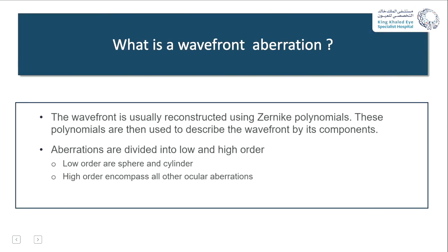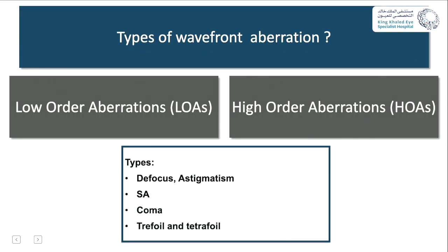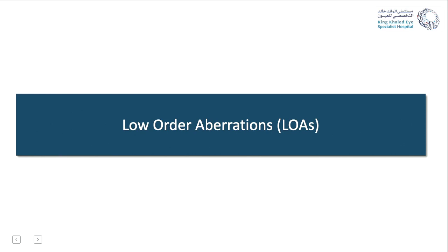The wavefront can be reconstructed using Zernike polynomials, and these polynomials describe the wavefront components. Aberrations are divided into two categories: low order aberrations — sphere and cylinder — and high order aberrations, which include coma, spherical aberrations, trefoil, and tetrafoil.